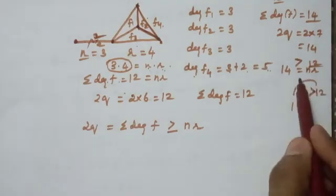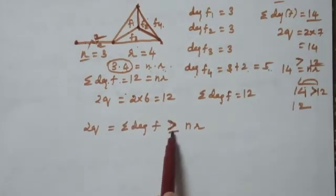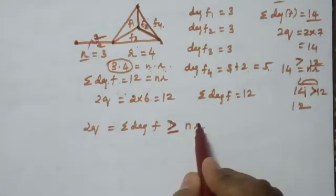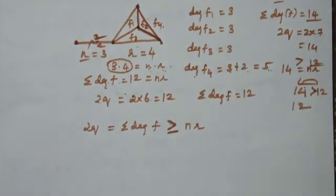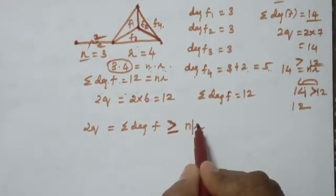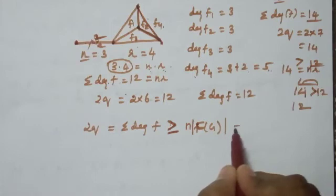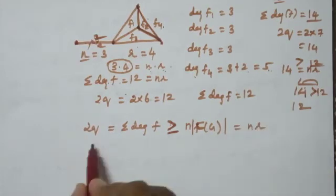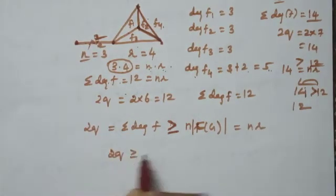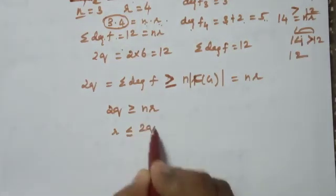The cardinality of F(G) is R, so 2Q is greater than or equal to N times R. From this condition we can write that R is less than or equal to 2Q divided by N.